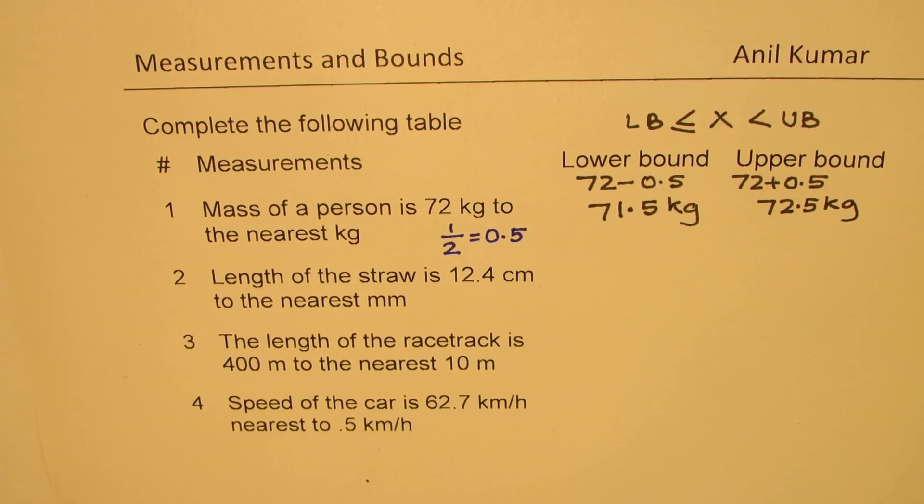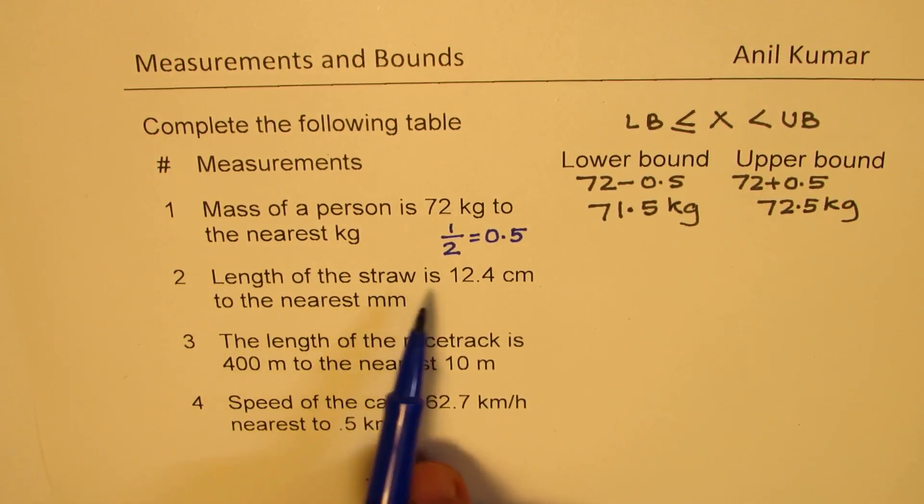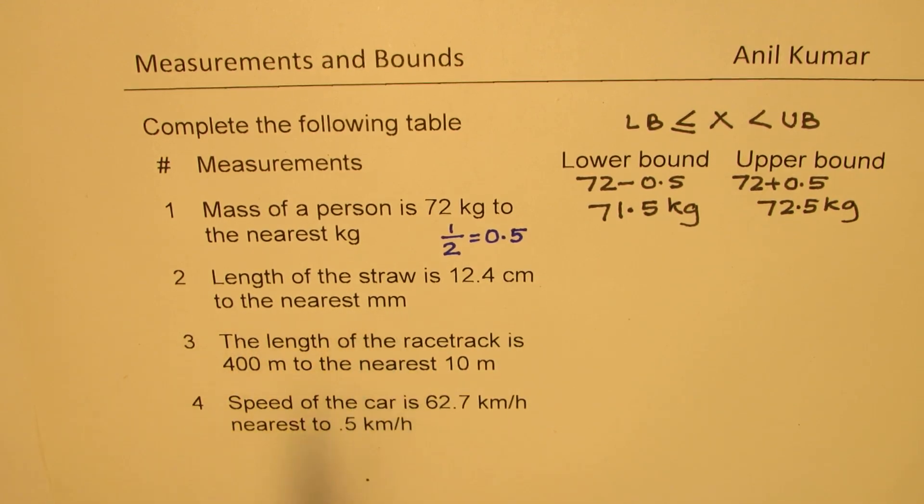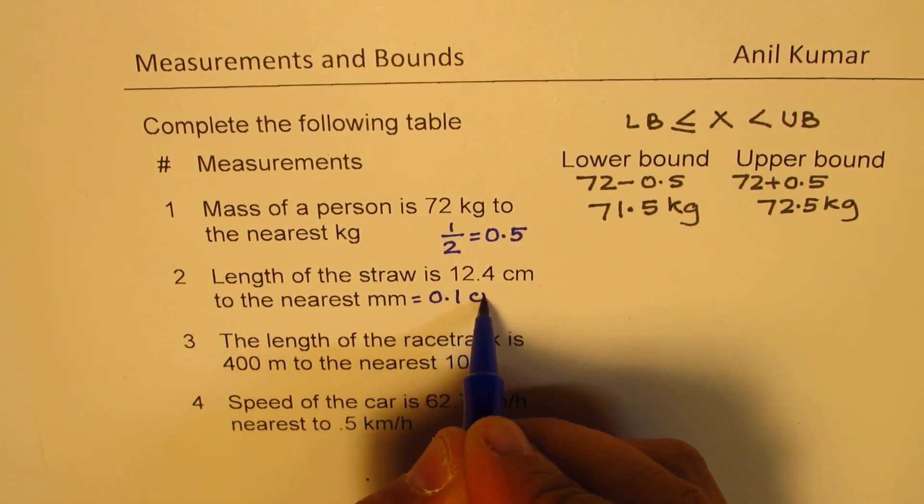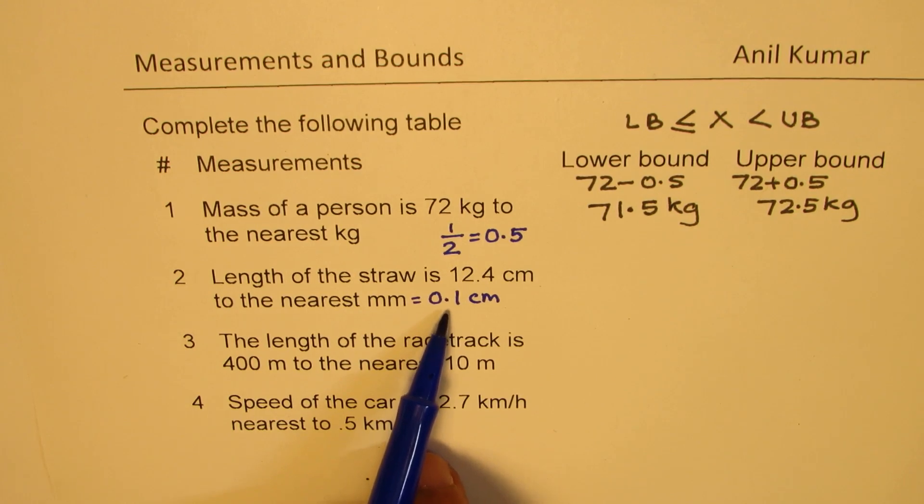Okay, the next one here is, length of a straw is 12.4 cm to the nearest mm. Now, 1 mm is equal to 0.1 cm, correct? So this time, our accuracy is to 0.1, right?